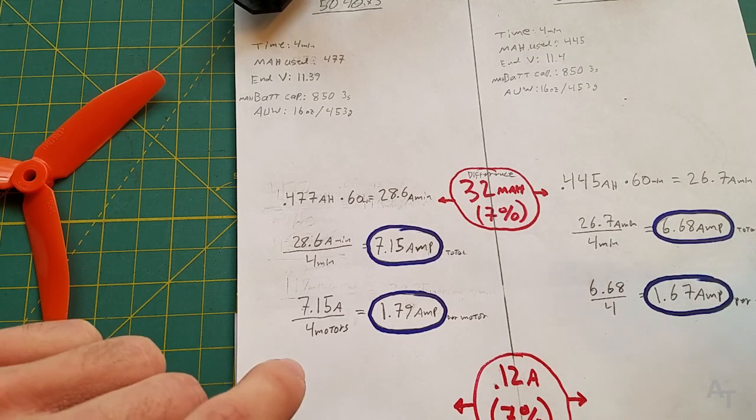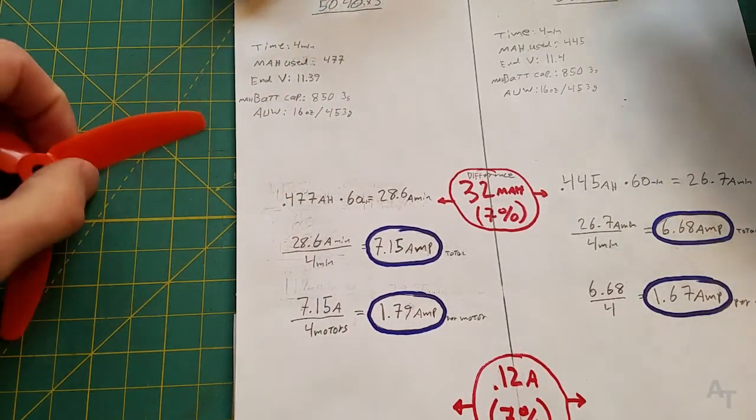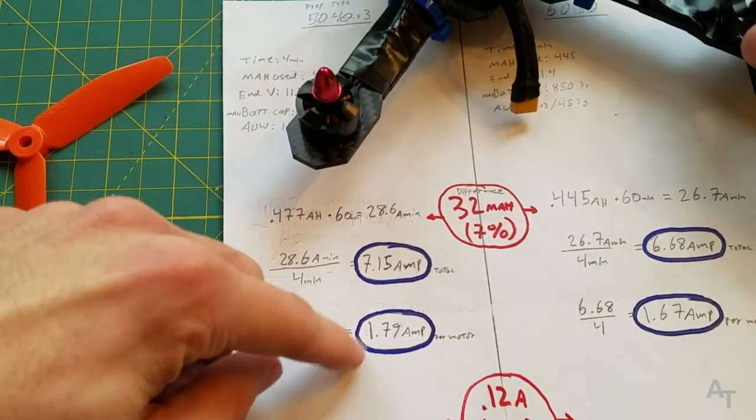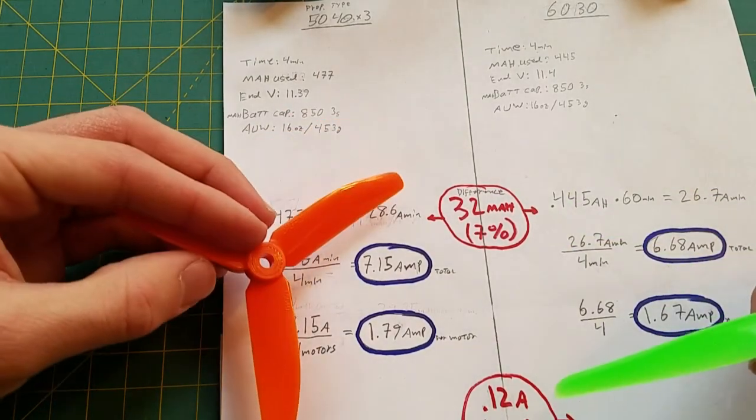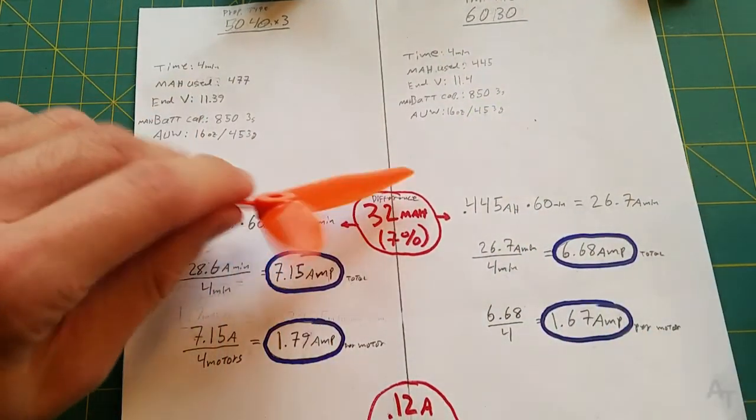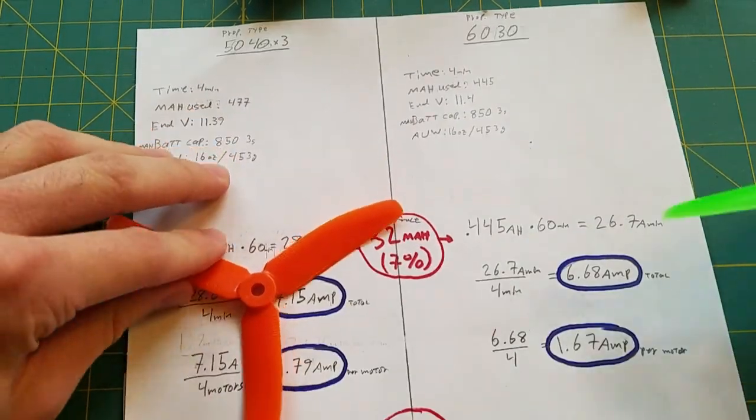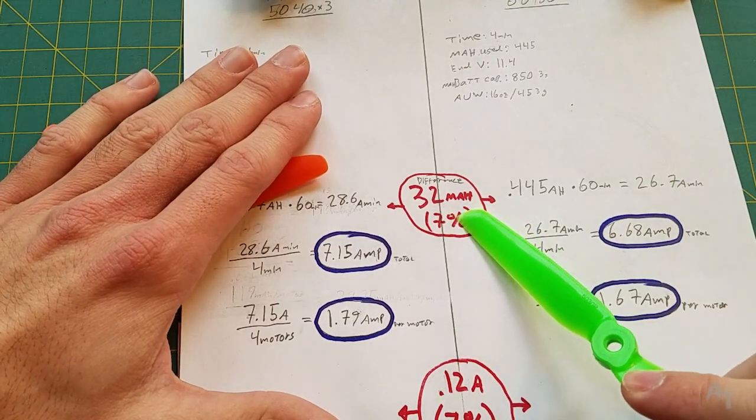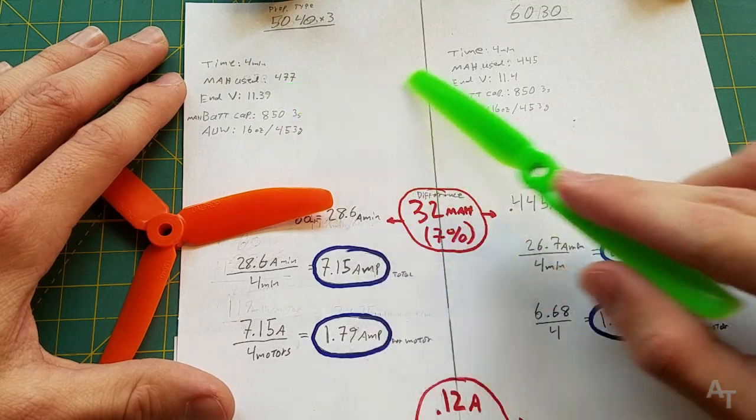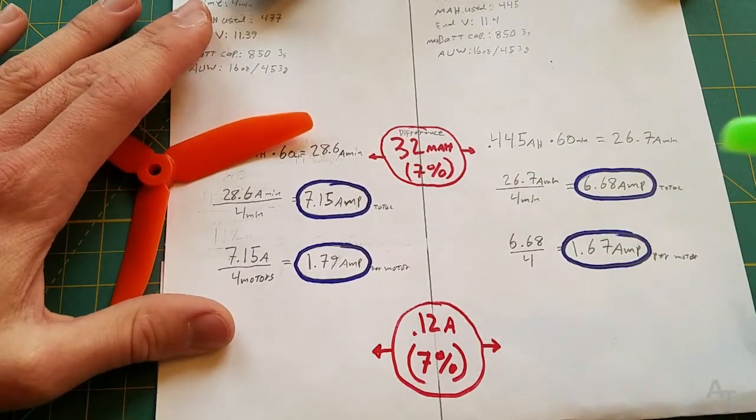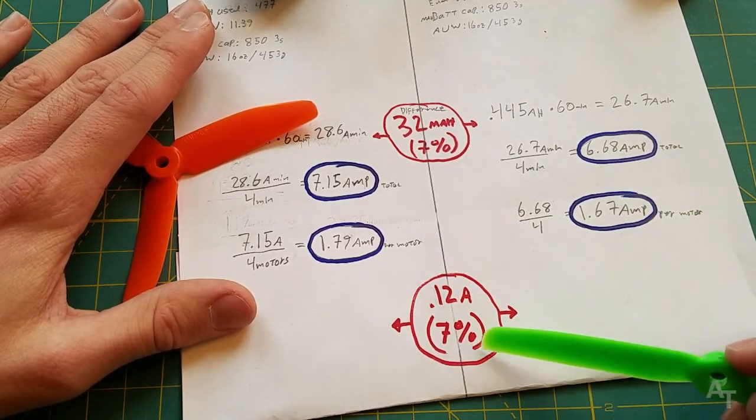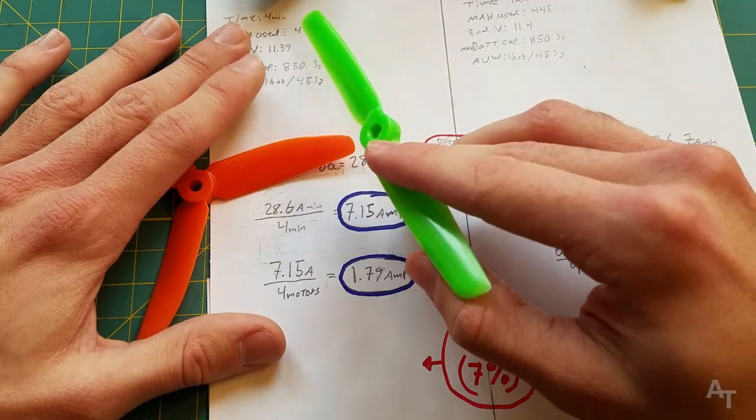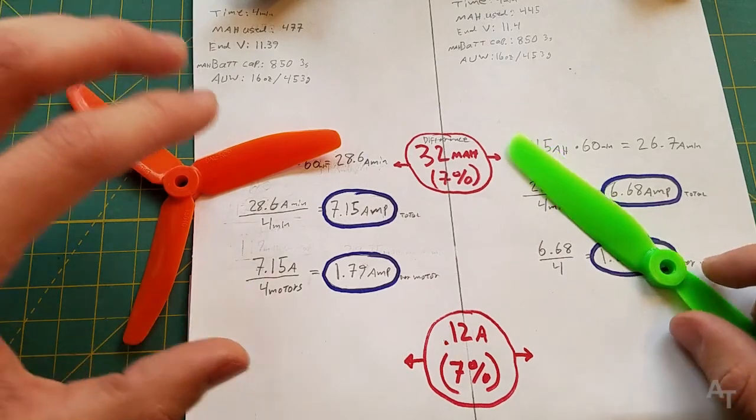That means I could put a lot more load on this because it's really not drawing very much at all, which I find very surprising. That's the tri-blade. We have the tri-blade on the left, the bi-blade 6030 on the right. Here we did the same thing, we got 6.68 amps, 1.67 amps per motor. We have a 32 milliamp hour or seven percent difference in the amount of battery used between the two types of propellers, and between the amps used it's also seven percent. That's one way we know I probably did this mostly right, because we get the same percentage of milliamps used as the amps drawn.